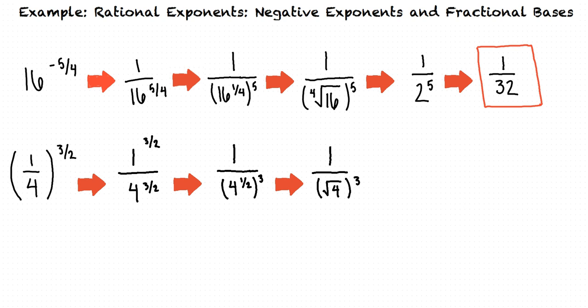The square root of 4 is 2 so this becomes 1 over 2 cubed. 2 cubed is 8 so our final answer is 1 eighth.